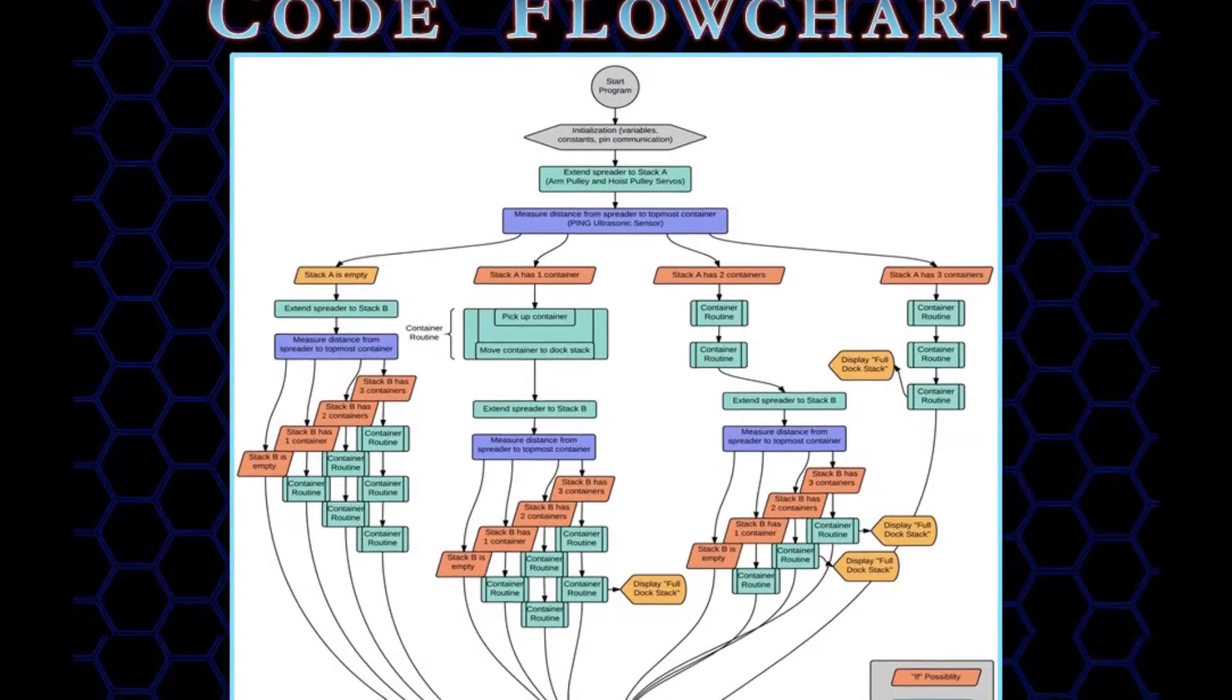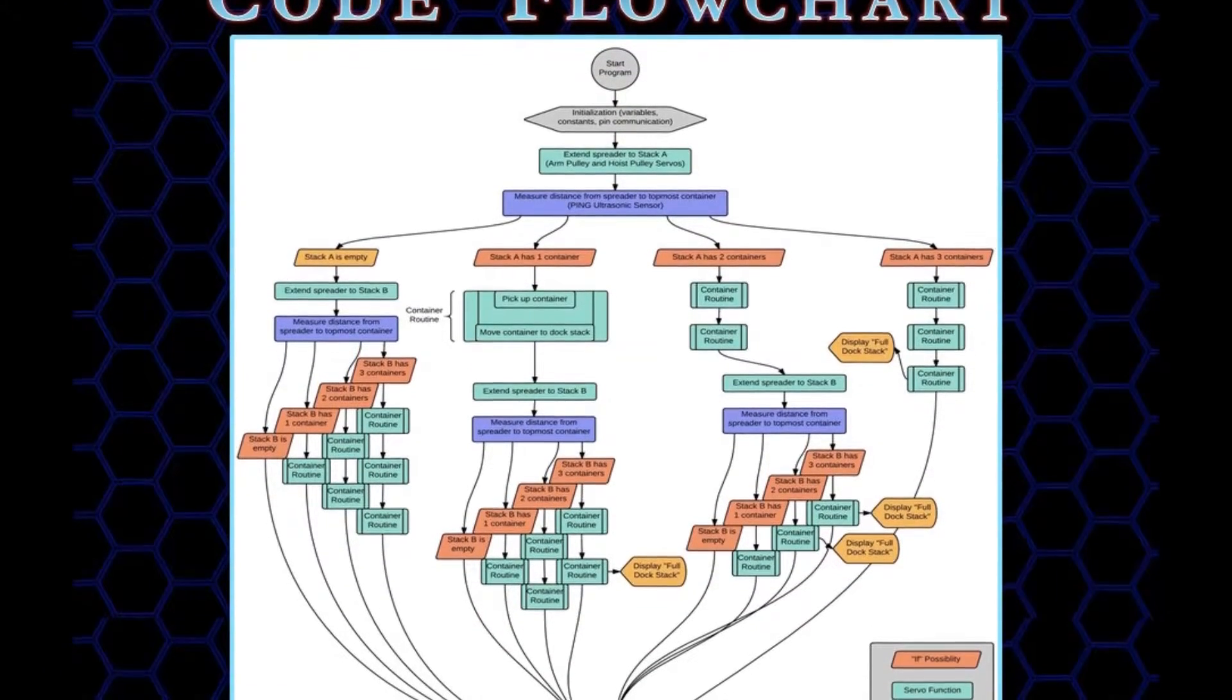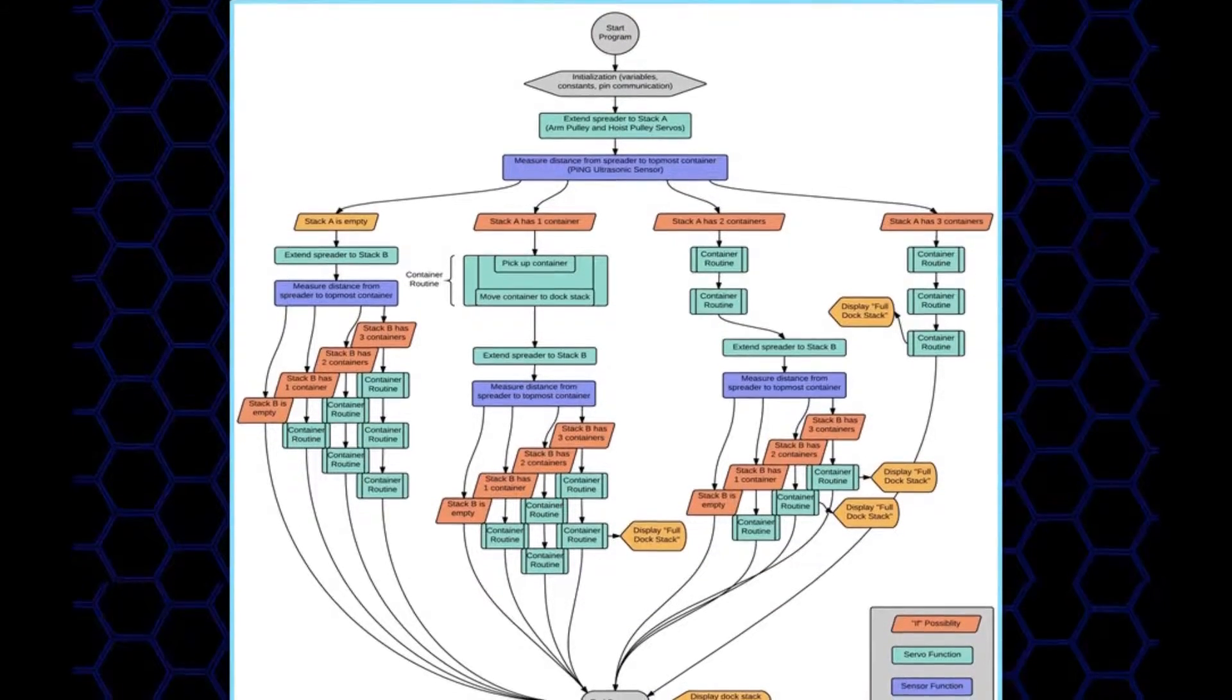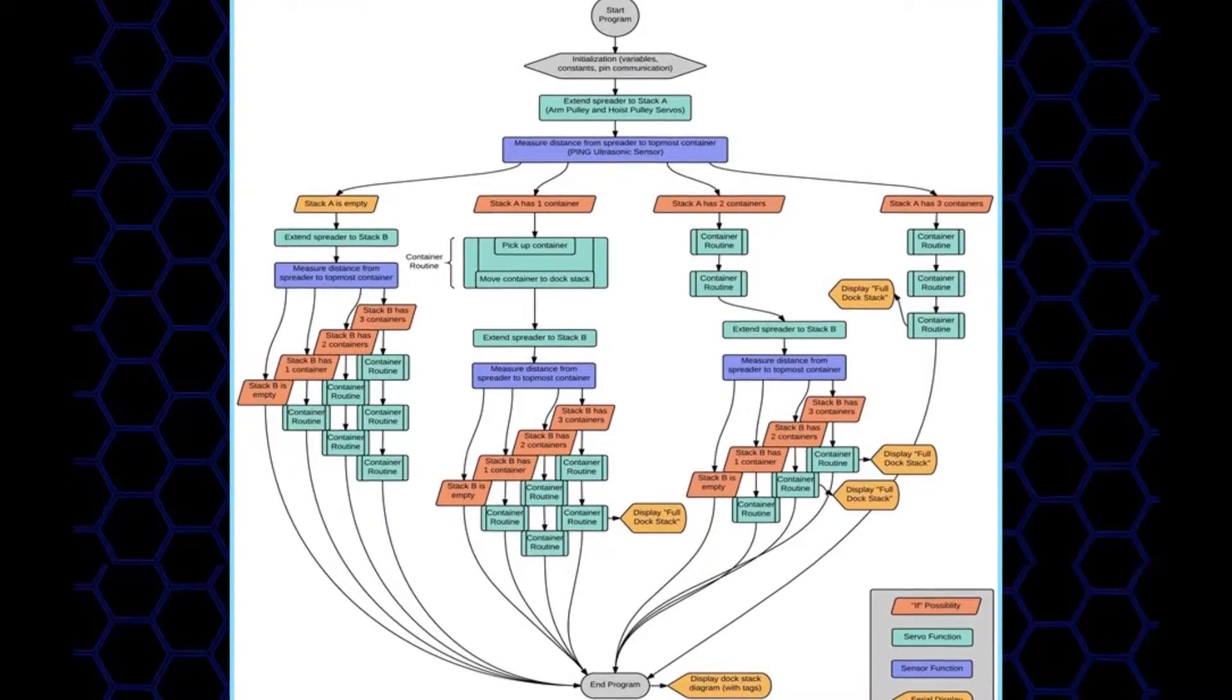Here is a flowchart of the program code. The code is mostly organized by if statements, meaning that the path of the program is dependent on variables, such as sensor reading values.